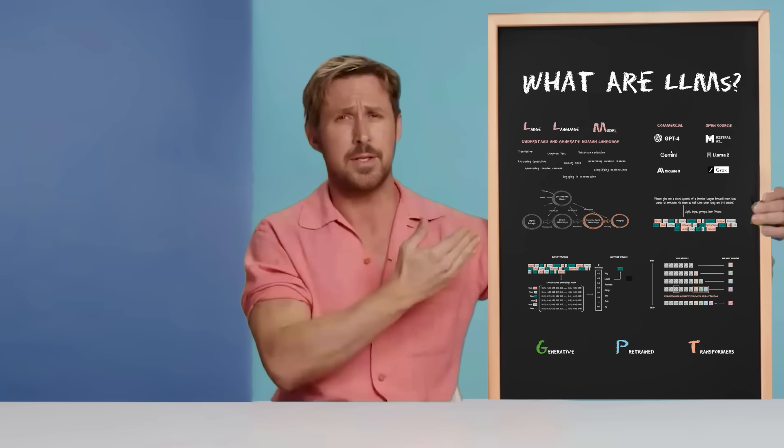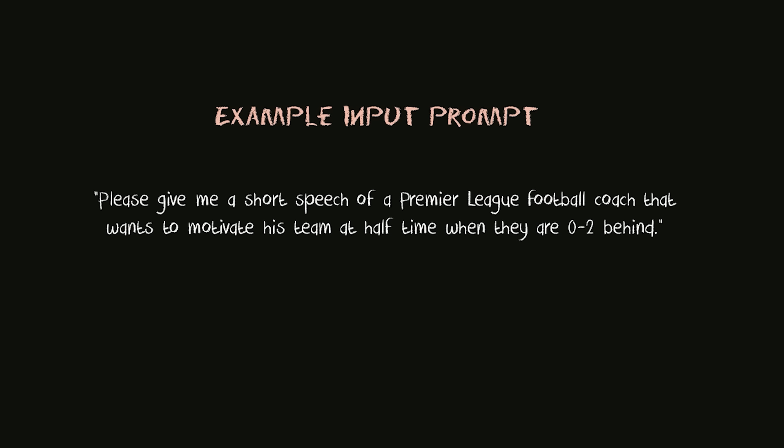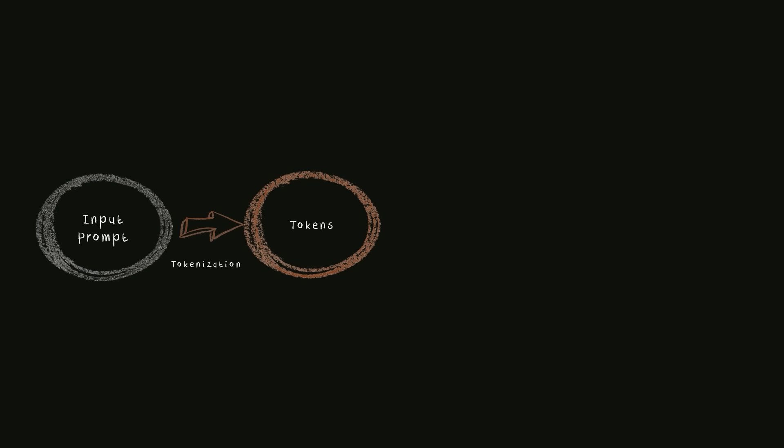Now, how does an LLM actually work? Text-to-text generation by large language models like GPT-4 involves a sophisticated process that converts a given input text into a desired output text. Let's go over a simplified version of this text-to-text generation process, starting from the user input all the way to the AI-generated output. First, let's talk about the input prompt. Let's say I ask the following question to a large language model like ChatGPT.